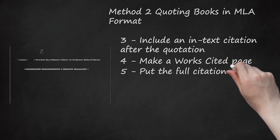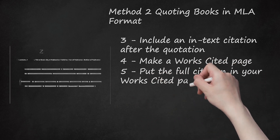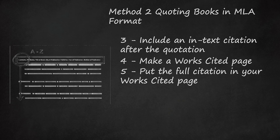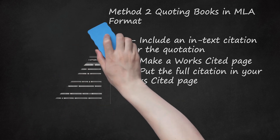Step 5: Put the full citation in your works cited page. Order your citations alphabetically by the author's last names. The basic format of an MLA-style book citation is: Last name, First name. Title of Book. City of publication: Publisher, Year of publication. Medium of publication. There are many variations based on factors like the number of authors, or whether it is an anthology, e-book, or self-published book. If the book doesn't fit neatly into this formula, consult a resource like the Purdue Online Writing Lab.